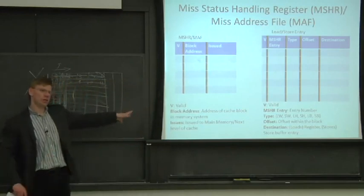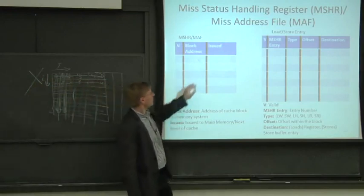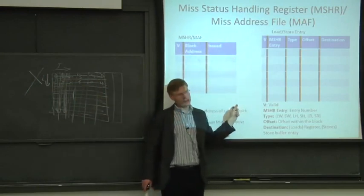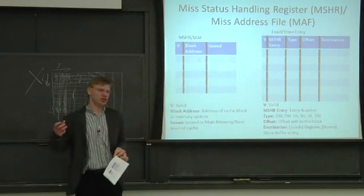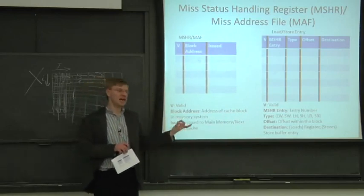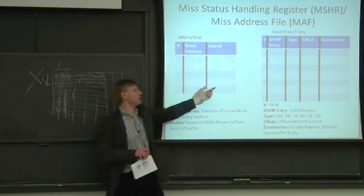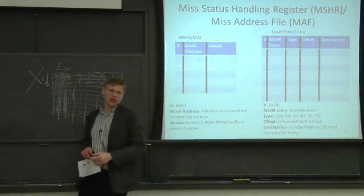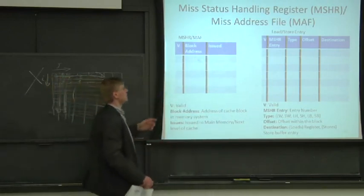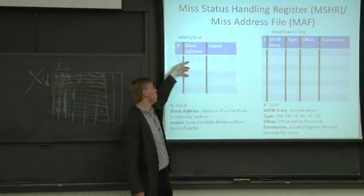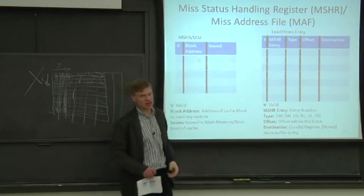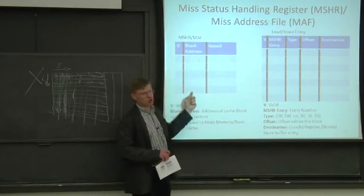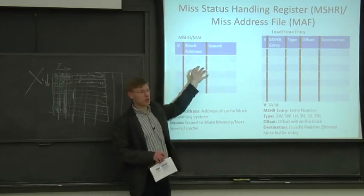This is only one implementation. Often in the miss status handling register there will be a tag field, because main memory won't necessarily return the full block address — it'll just return a tag. So instead of checking against the block address you check against a smaller tag. Another optimization: if you have a small number of entries, the tag can simply be the entry index itself, avoiding an associative check on returns — though you still need associative checks when future loads and stores that miss go out to memory.